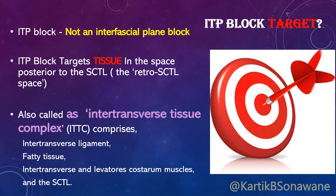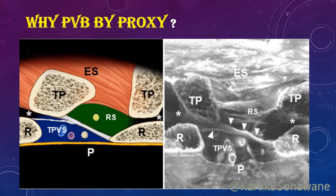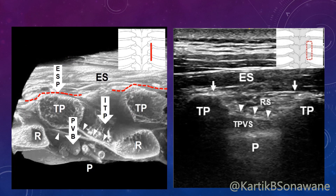This tissue complex is called the inter-transverse tissue complex, consisting of the inter-transverse ligament, fatty tissue, inter-transverse and levator costarum muscles, and the superior costo-transverse ligament. It is called a paravertebral block by proxy because, in the sagittal section of the inter-transverse process region, the area posterior to the superior costo-transverse ligament appears directly communicated with the thoracic paravertebral space via the slit structure of the superior costo-transverse ligament and via the costo-transverse space.